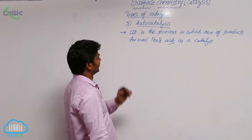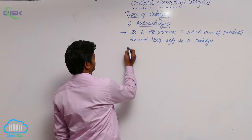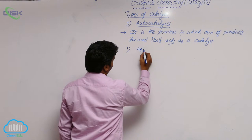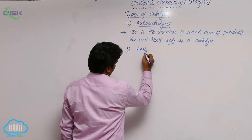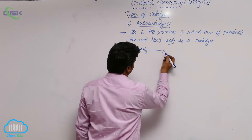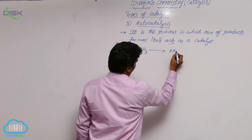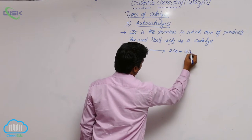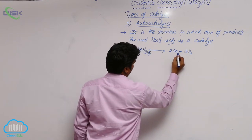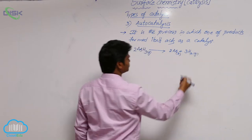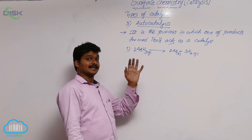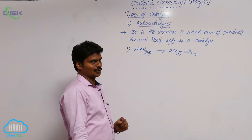Let's see some examples of autocatalysis. The first is the decomposition of arsenic hydride, AsH₃. This arsenic hydride decomposes to arsenic plus hydrogen gas — a gas-solid-gas system. This reaction is initially slow.